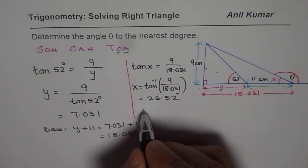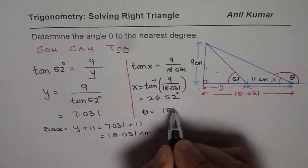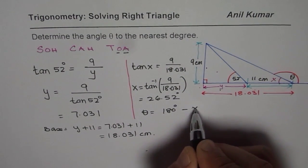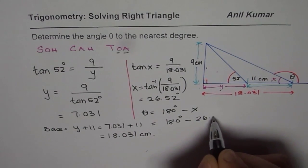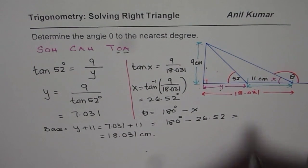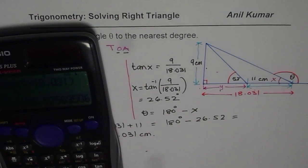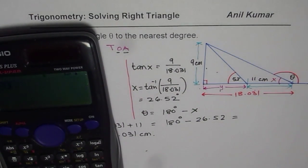Now what is theta? Theta is equals to 180 degrees minus x, which is 180 degrees minus 26.52. So let's use calculator, find the answer. 180 minus 26.52.